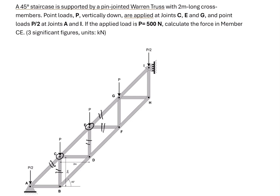We make a cut at CE, CD, and BD. After making the cut, we do analysis on the upper part of the truss. We need to determine the reaction force at support I. This is a roller support at joint I, so we have one reaction force, which we call Ix.